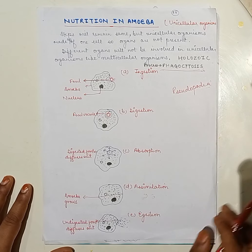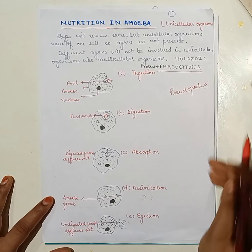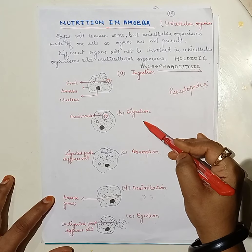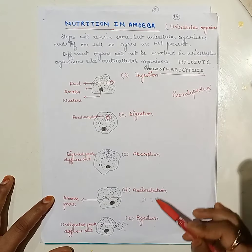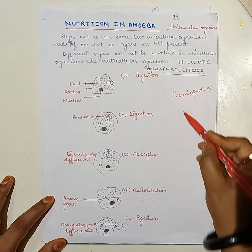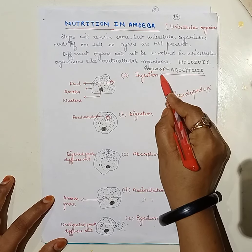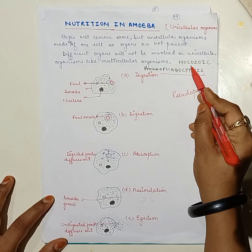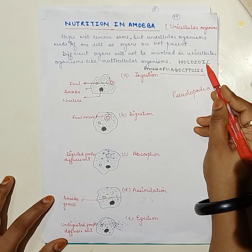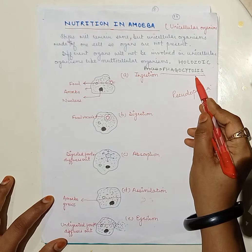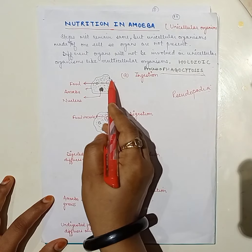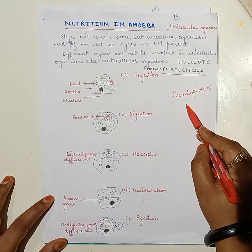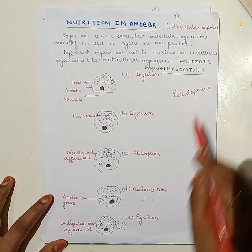To conclude: in the case of unicellular organisms, the steps of nutrition remain the same — ingestion, digestion, absorption, assimilation, and egestion — but the process is called phagocytosis. The mode of nutrition, both in multicellular and unicellular organisms, is holozoic. Amoeba forms finger-like projections called pseudopodia, and digestion takes place through the general body surface.